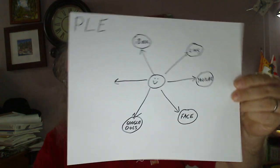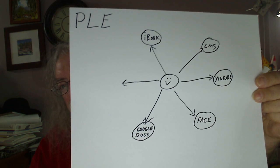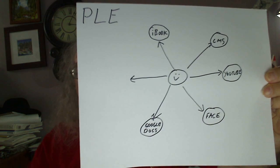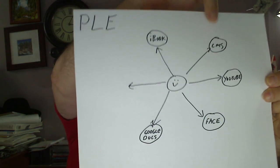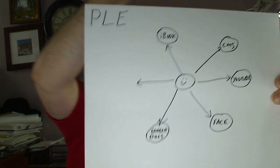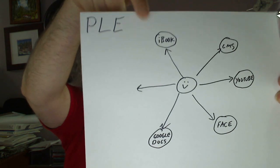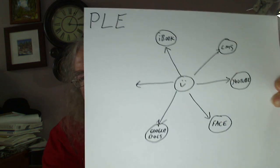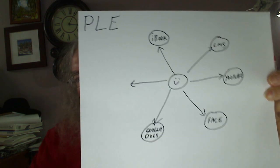A personal learning environment, by contrast, does not place a large piece of software at the center. Rather, the model is you — the individual — are at the center, and then you access your content and services from different places all over the web. You can still access a learning management system, but you're also accessing things like iBooks, Facebook, Google Docs, etc. Whatever you want to access, wherever you want to access it.